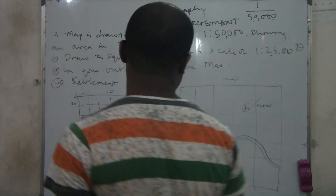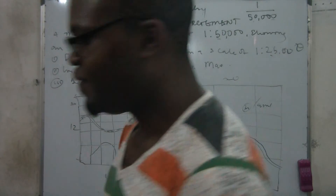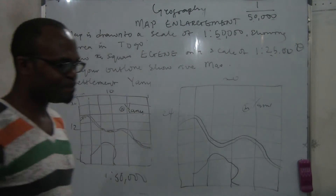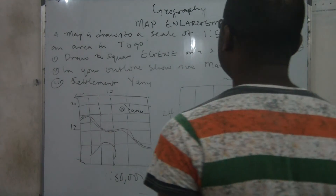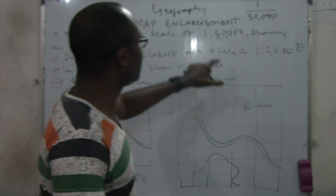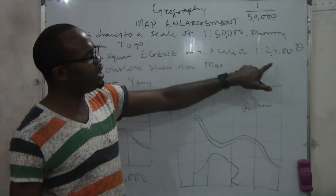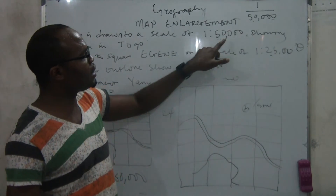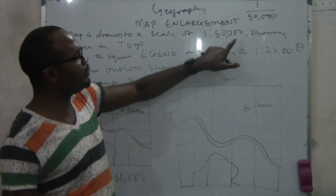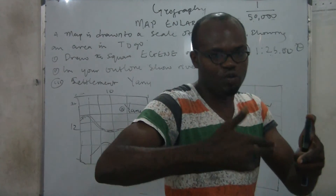That's how you do map enlargement — from here to here, it's very simple. With this method, you can always know whether you are doing reduction or enlargement. Once you look at the two scales — the given scale and the one they expect you to produce — if the denominator of the given is bigger than the one of the expected, you know it's enlargement. If this one is smaller than that one, you know it's reduction.